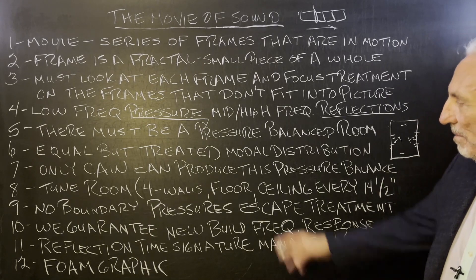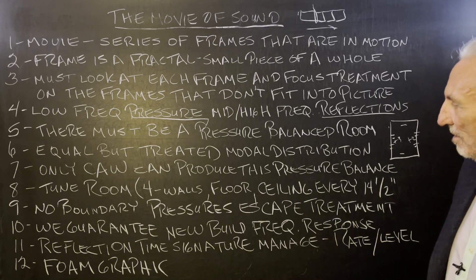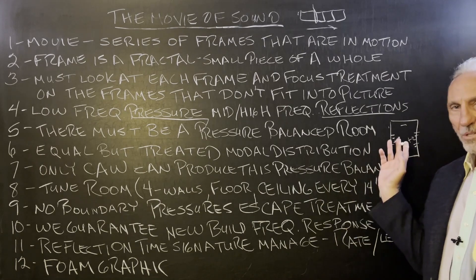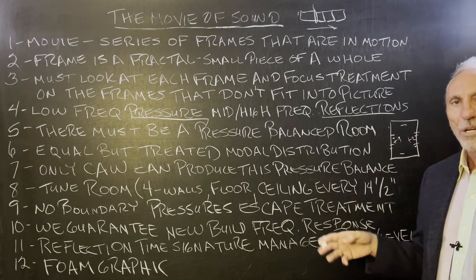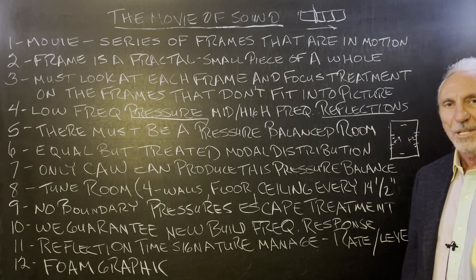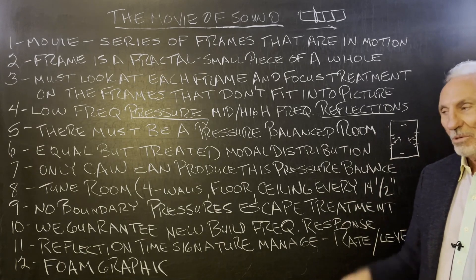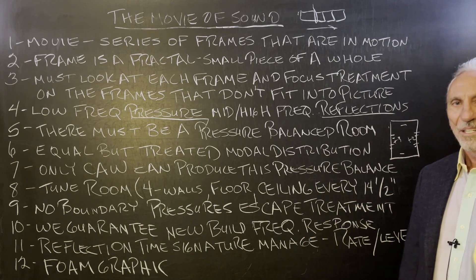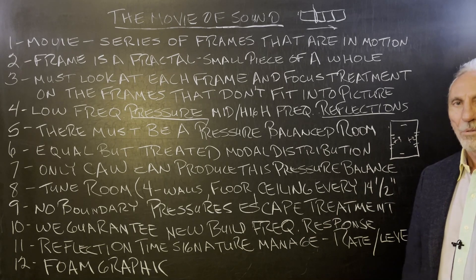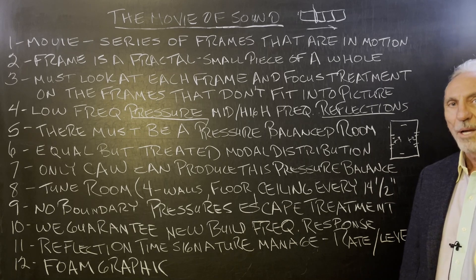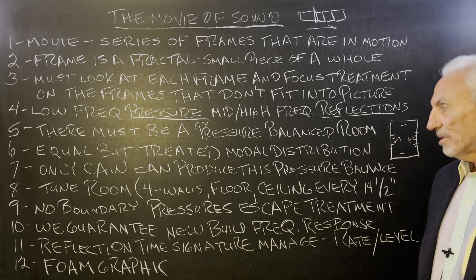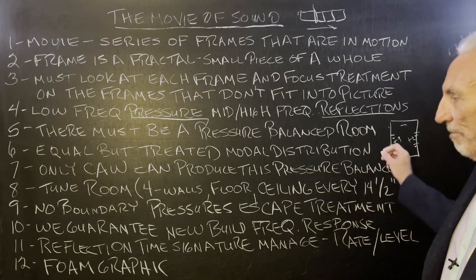And that's what our CAW was designed to do. Only our CAW can do this because we're going after the pressure every 14 and a half inches. When you do that, nothing can get away. Modes are three to three and a half feet wide on average, so we're going after them twice within one mode. It's a powerful tool.